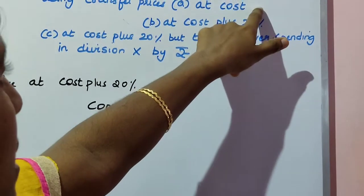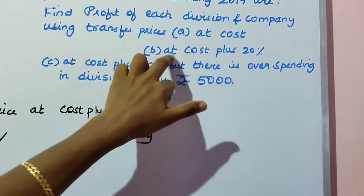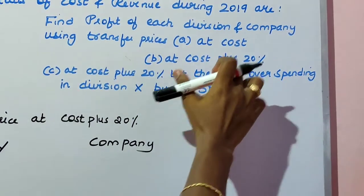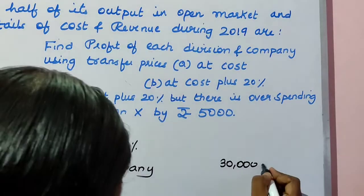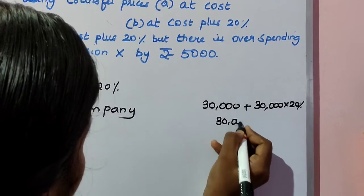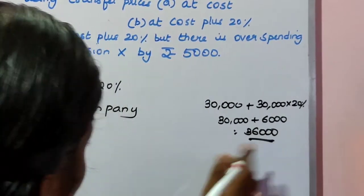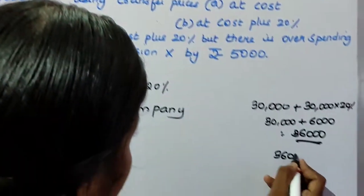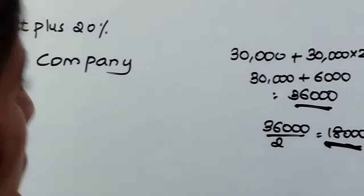Now we find profit using transfer price at cost plus 20%. The cost of X is 30,000. Adding 20%: 30,000 plus 6,000 equals 36,000. Since half is sold to division Y, the transfer amount is 36,000 divided by 2, which is 18,000. This 18,000 is the output transferred to division Y.